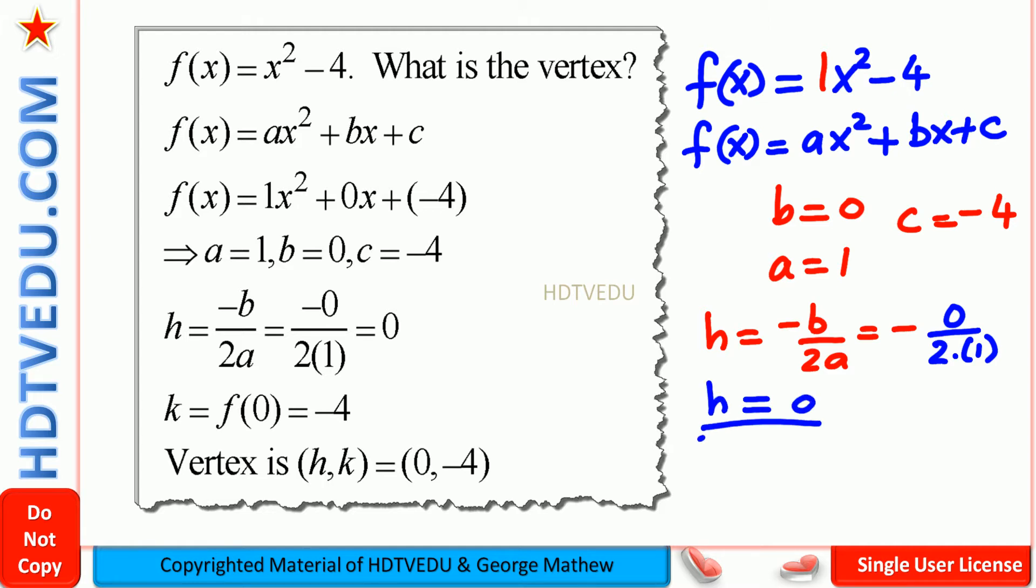So h equals 0. How do we get k? Remember, on a graph paper, you always have x and y. So h by itself is not a vertex. You need k. You need the x part and the y part. So we have h equals 0. So what do we do?